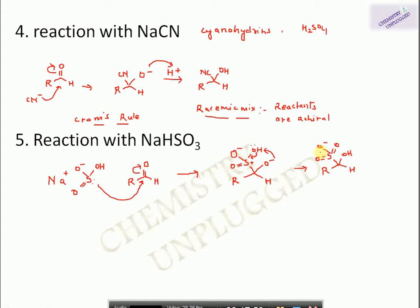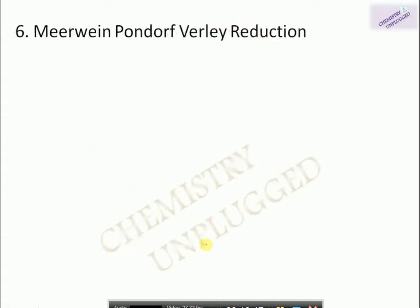This reaction is reversible; therefore bisulfite compounds are useful as intermediates in synthesis. For example, in a reaction of acetone with sodium bisulfite and HCN, the bisulfite addition compound acts as an intermediate, which then reacts with CN⁻ to give cyanohydrin of acetone as the final product.